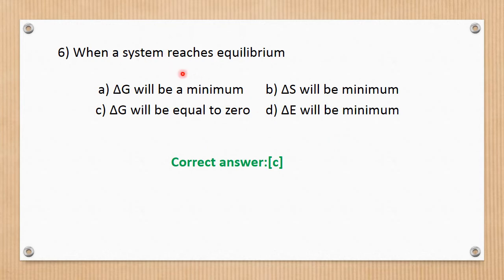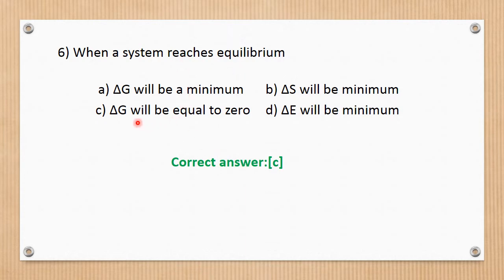When a system reaches equilibrium, delta G will be equal to zero. Delta S will be at its maximum. If delta G equals zero, the system is at equilibrium. When a system reaches equilibrium, delta G equals zero. The correct answer is C.